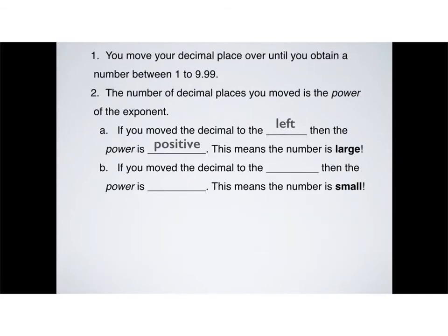All right. So, on that last slide, how did I go about making those numbers into scientific notation? Well, there are just two rules. The first rule is that you have to move your decimal place over. And so, you have a number, let's say like 170, that's where the decimal point would be. The first step is to move your decimal place over until you obtain a number between 1 to 9.99.